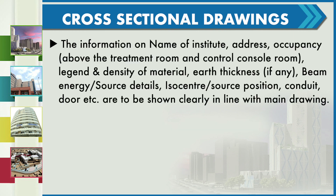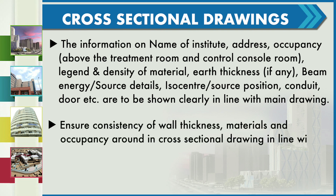The information on the name of institute, address, occupancy above the treatment room and control console room, legends of density of materials, earth thicknesses if applicable, beam energy, source details, isocenter, source position, conduits, and doors are to be shown clearly in line with the main drawing. Ensure consistency of wall thicknesses, material, and occupancy in cross-sectional drawings in line with the main drawing.